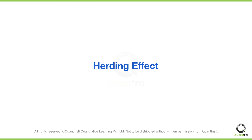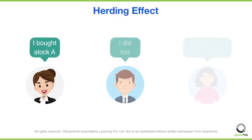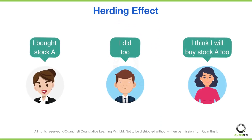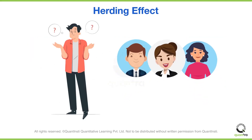In simple terms, the herding effect occurs when traders tend to group together and trade the same asset. We often find it emotionally or psychologically painful to go against the crowd. And when everybody is trading a particular stock, it's very normal to have a fear of missing out on making money.